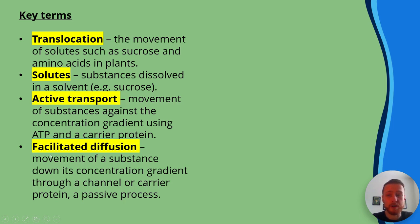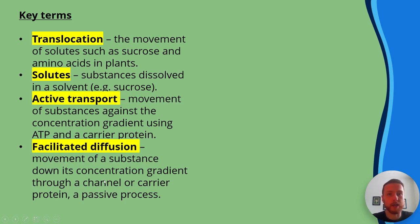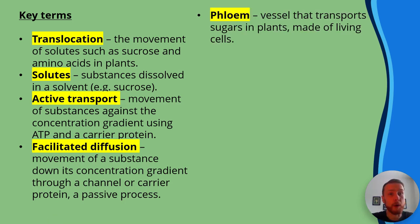Facilitated diffusion is the movement of a substance down its concentration gradient through a channel or carrier protein. Facilitated diffusion is a passive process. The phloem is a vessel that transports sugars in plants, and it's made of living hollow cells.